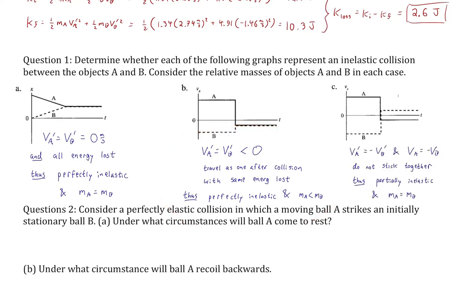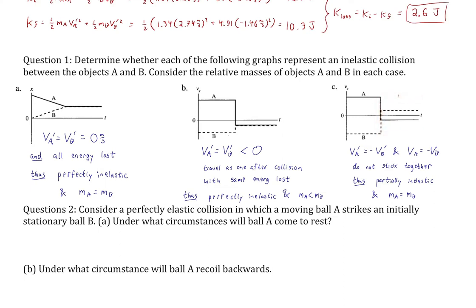Graph C shows symmetry: VA prime equals negative VB prime, and VA equals negative VB. The objects started with opposite but equal velocities and ended the same — they just swapped. They don't stick together because their final velocities differ. Some energy was lost, making it a partially inelastic collision. Since the velocity changes are exactly equal and symmetric, the masses must be equal.